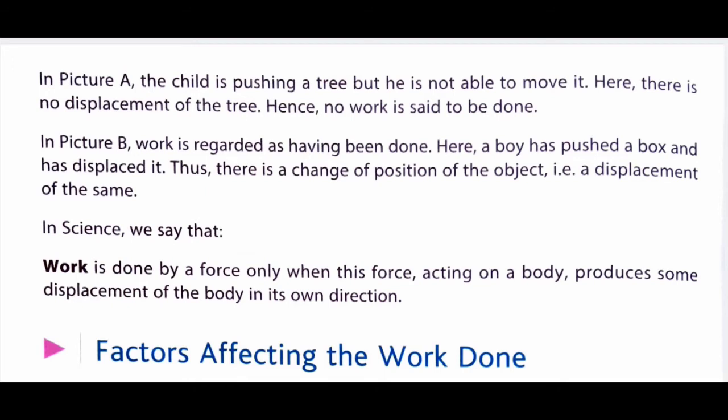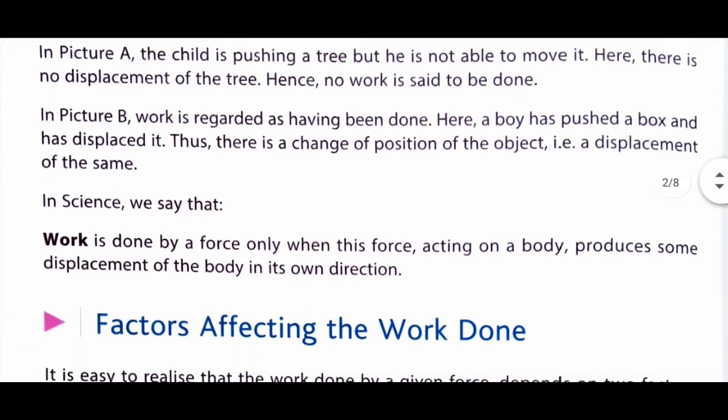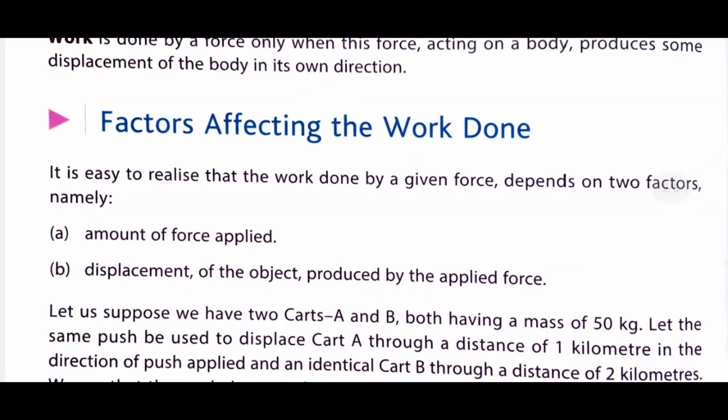Now let us learn about the factors affecting the work done. Work done pe kaun-kaun se factors affect karte hain. It is easy to realize that work done by a given force depends on two factors: namely, the amount of force applied, aur second hai displacement of the object produced by the applied force. So work done depends on two factors — the force applied and the displacement.